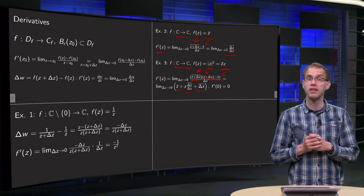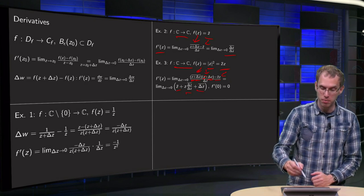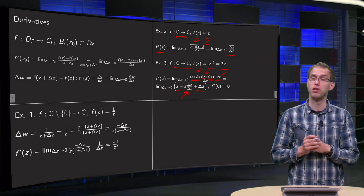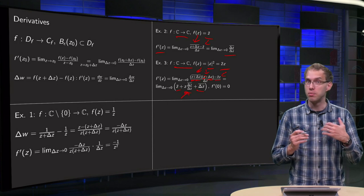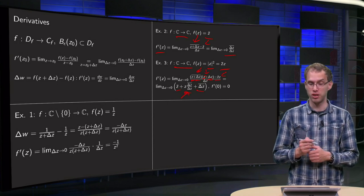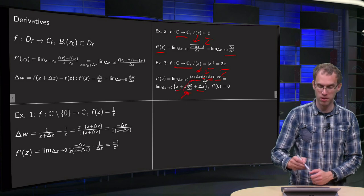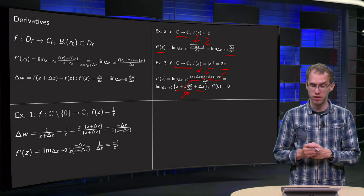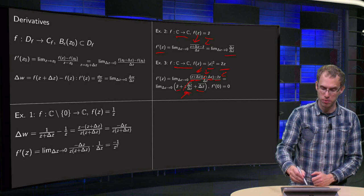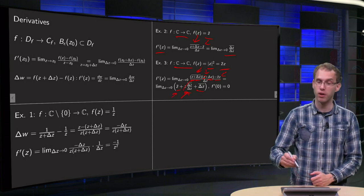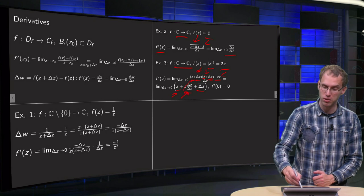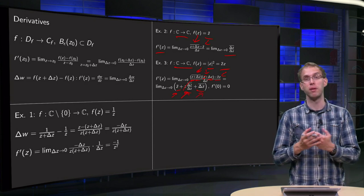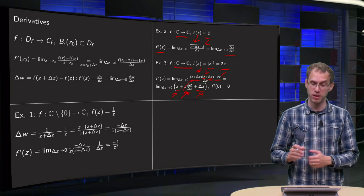So what do we get? Well, we cannot take this limit here because again we have our delta z bar over delta z. We have seen earlier that the limit doesn't exist. So this limit doesn't exist unless your z equals 0, because then this term cancels out. So f is only differentiable in 0, and in 0 the derivative becomes 0 because in 0 z bar is 0 as well, and we take delta z to 0 so delta z bar equals 0 as well in the limit.